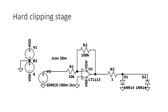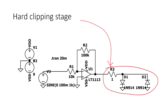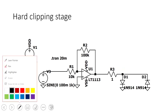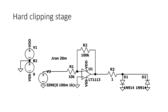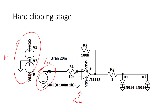A different type of distortion stage is the hard clipping stage. The hard clipping comes from two limiting diodes that clip the signal. This works differently from soft clipping even though we still have an op amp. The op amp here is only providing gain — there's no distortion in that stage. We've got the input VIN, power supply, and then hard clipping.